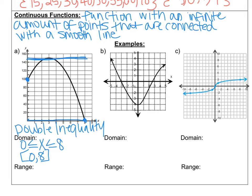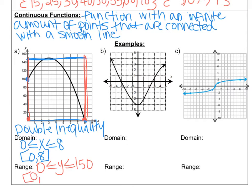Now let's switch and go to the range — looking from bottom to top for my least to greatest y-value. My least y-value is at 0. The maximum goes all the way up to 150, not 100 — a lot of students make that mistake. So I would write: 0 ≤ y ≤ 150, or in interval notation [0, 150].